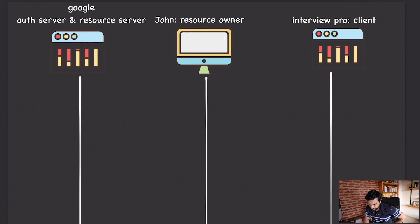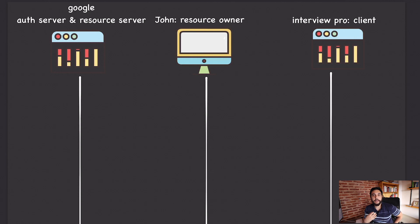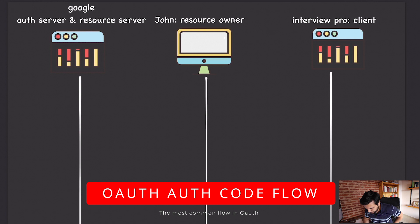In this diagram we have John in the middle. John is the resource owner according to OAuth terminology, because he's the owner of the calendar — the calendar being the resource. The client is going to be Interview Pro. Don't confuse the client in OAuth with the browser — we are the client because, to Google, which is the authorization server, we are the client requesting access on behalf of John.